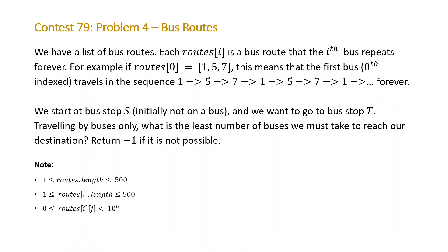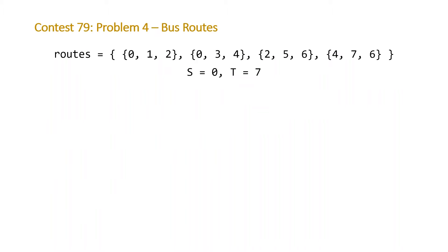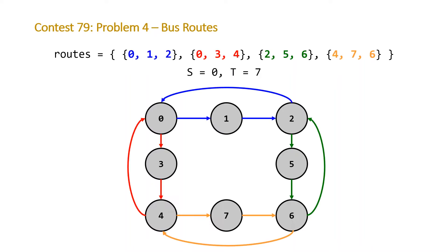Let's take a look at an example. Here we have our vector of vectors which represents all of our routes. Each vector is a route, and we have our starting stop 0 and our ending stop 7. Visually, we've got four different routes, color-coded blue, red, green, and orange, and we want to get from stop 0 to stop 7. Each route represents its own cycle.